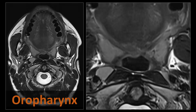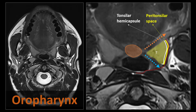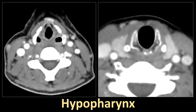At the level of the oropharynx, you should immediately recognize the components of the tonsillar fossa: the uvula, the palatine tonsils, and the anterior and posterior tonsillar pillars formed by the palatoglossus and palatopharyngeal muscles respectively. The superior constrictor muscle forms the lateral wall of the tonsillar fossa and continues as the posterior pharyngeal wall. Remember that the tongue base is part of the oropharynx and not the oral cavity. There is also a peritonsillar space, which is the location for peritonsillar abscesses.